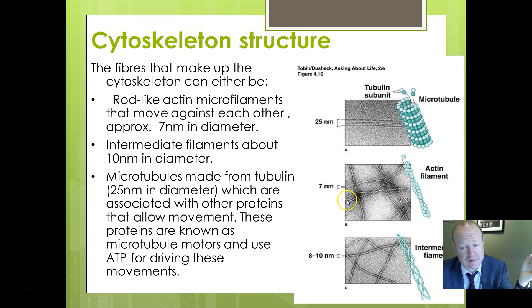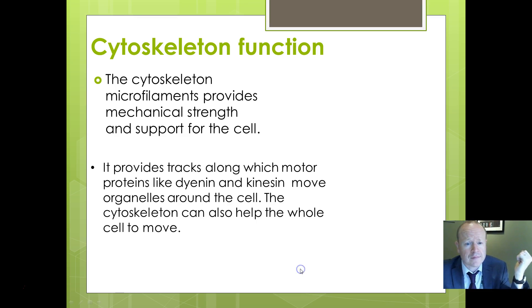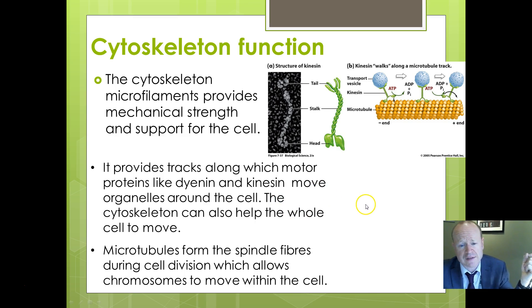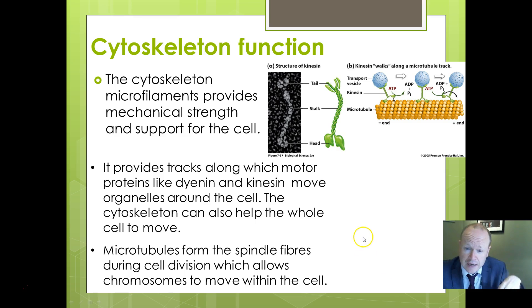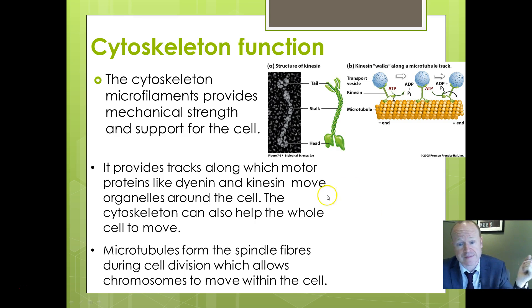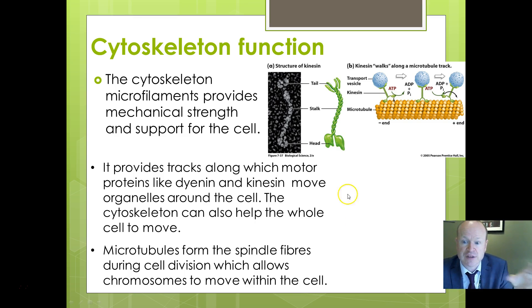One of the principal functions of the cytoskeleton is to provide a framework supporting the cell and allowing movement of substances within it. Motor proteins dynein and kinesin move organelles around the cell — for example, in a rapidly photosynthesizing palisade cell they move chloroplasts closer to the light. They also move vesicles to the cell membrane so they can fuse with it, providing tracks for substances moving into or out of the cell, and enabling some single-celled organisms to move.